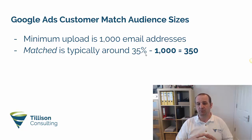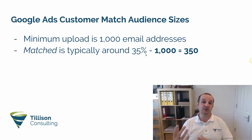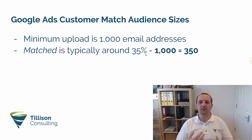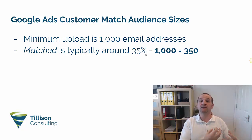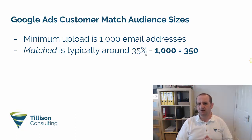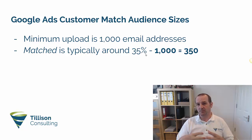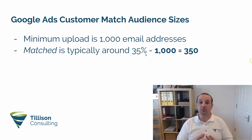What it's matching is the primary email address that user is logged into Google with when they're browsing around. So if you're logged into Google because you're using Gmail, you're browsing around and Google knows that session for that user is tied to that email address - that's how it's matching that information. It's matching around 35%. So if you want 1000 people in your audience, you want to be aiming for about three times that figure. When we get into the more advanced stuff, just remember these numbers because you're going to need a reasonable number of people to make your campaigns worthwhile.